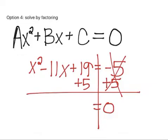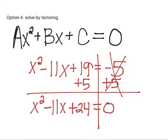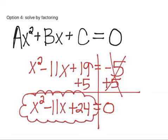And let's see. I would add this five to the 19 because it does not have any x's attached to it. So that would be plus 24, negative 11x, and x squared. Once you have set it equal to zero, this right here is the equation that you will be factoring.